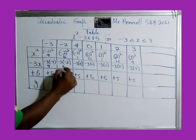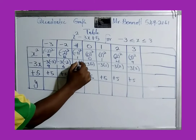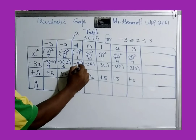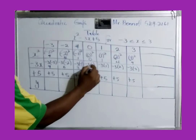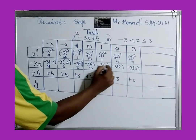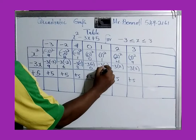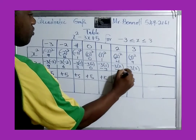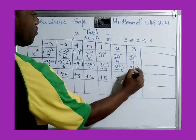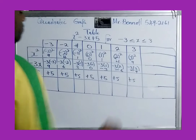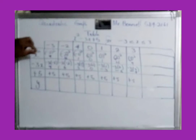For the negative 3x row: negative 3 times negative 3 is positive 9, negative 3 times negative 2 is positive 6, negative 3 times negative 1 is positive 3, negative 3 times 0 is 0, negative 3 times 1 is negative 3, negative 3 times 2 is negative 6, negative 3 times 3 is negative 9.